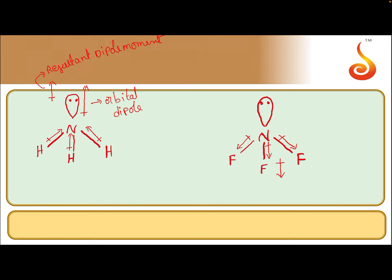The orbital dipole — the dipole moment due to the lone pair — is in the upward direction. So the orbital dipole is in the upward direction and the resultant dipole moment is in the downward direction — they are in opposite directions.